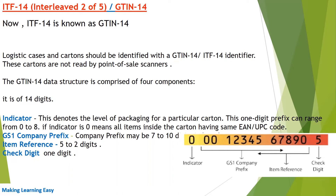I have attached one screenshot of the GTIN-14 code. It first shows the indicator 0, then the company prefix of 9 digits, then the item reference of 3 digits, and the last is the check digit which is 5.